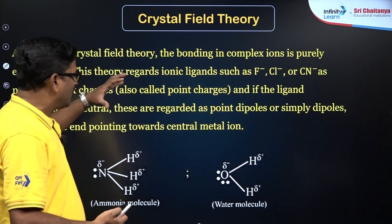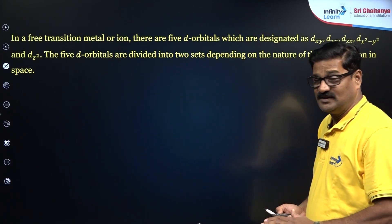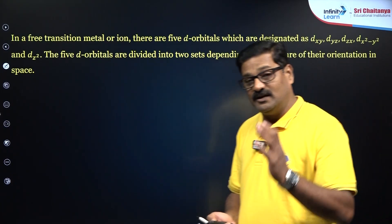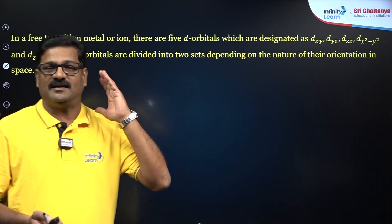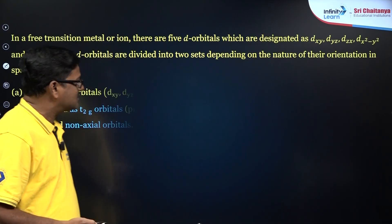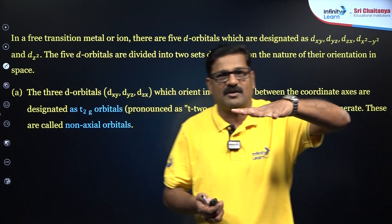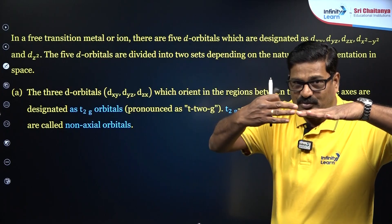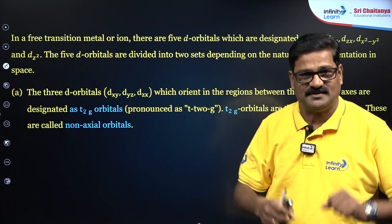Based on that, we look at the involvement of the d orbitals. There are 5 d orbitals: dxy, dyz, dx²-y², dzx, and dz². When these 5 d orbitals are degenerate and a ligand approaches, the degeneracy of the d orbitals is lost.